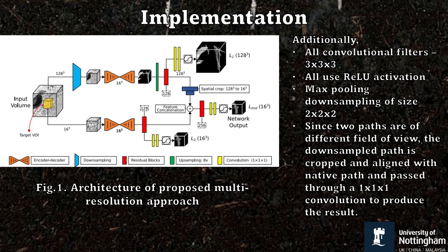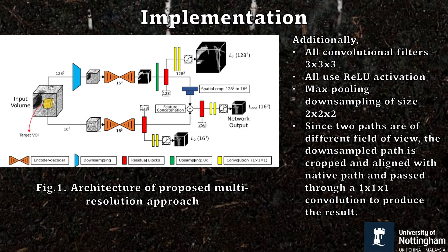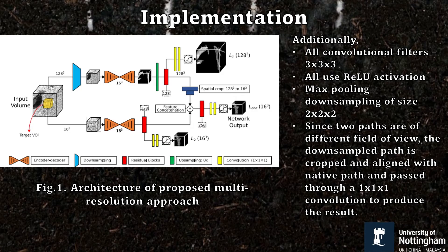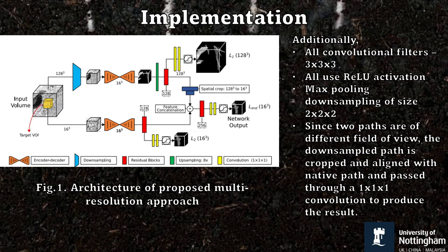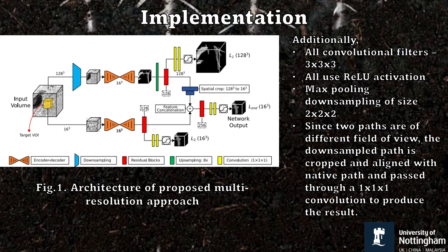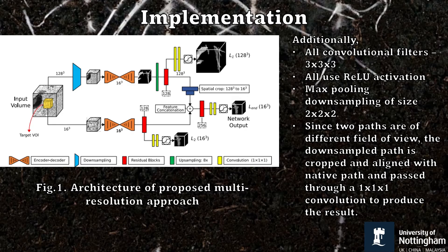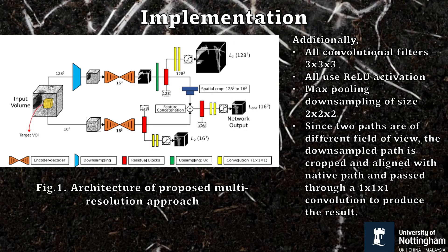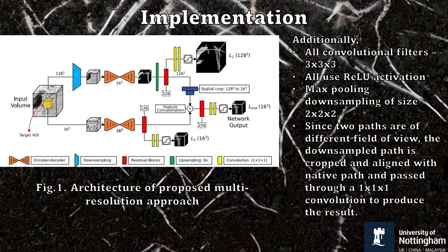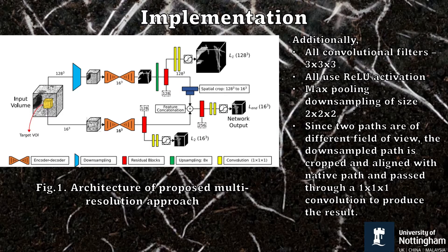The figure shows the proposed architecture. What's unique is that the input is a 3D volume rather than a 2D image. The network consists of two paths: the upper, named the down-sampled path, uses a 128-cube input size and extracts features at a coarse resolution. The lower path, named the native path, accepts a 16-cube input size and produces finer segmentation detail using the native resolution of the volume.